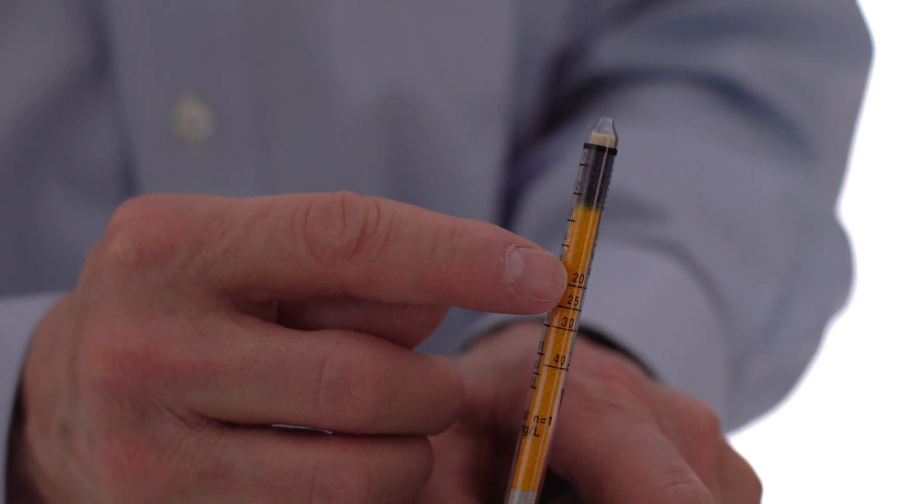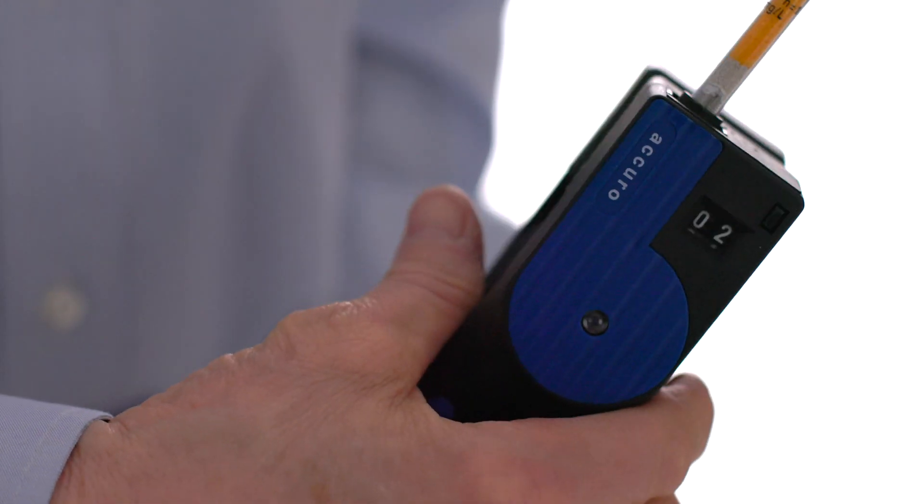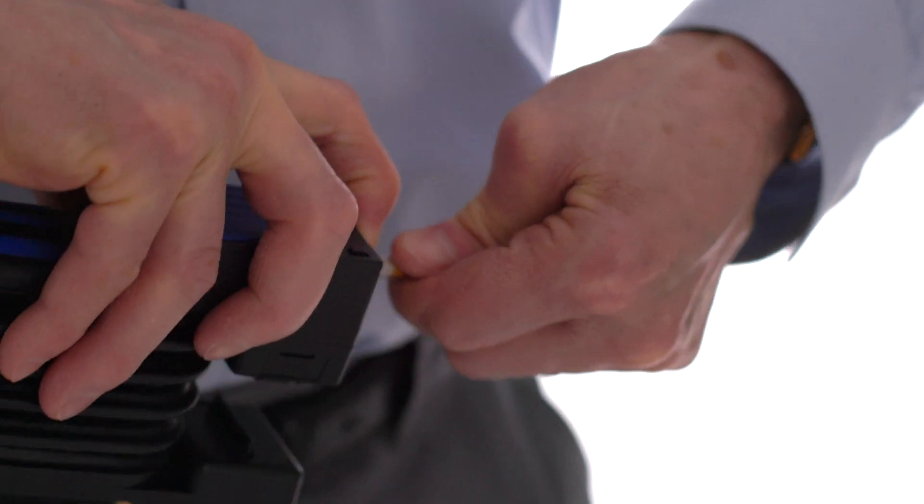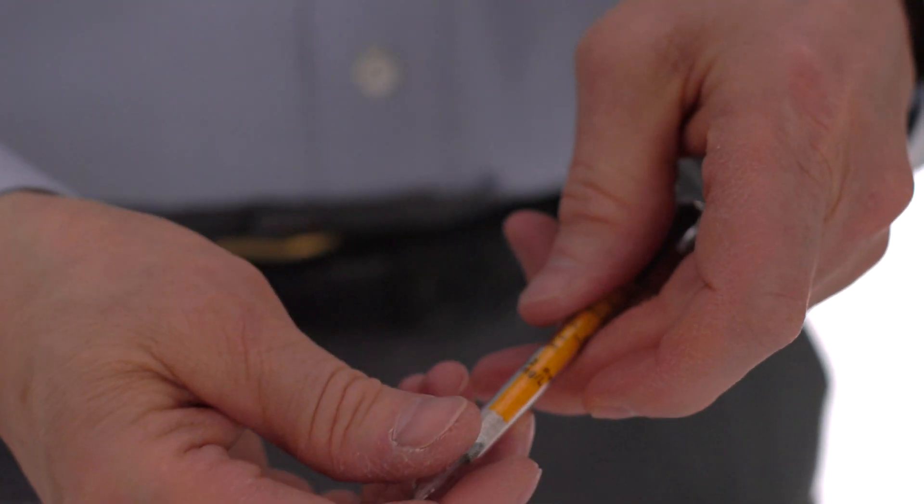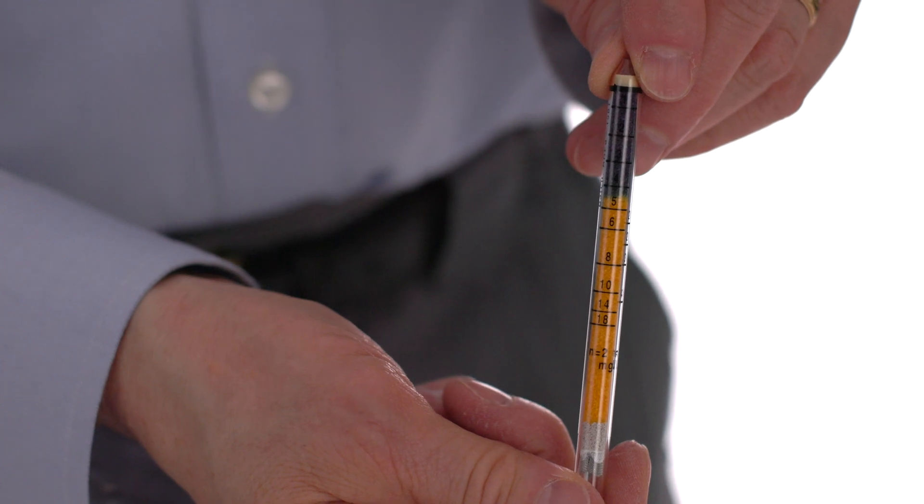The discoloration did not reach the high range scale. Therefore, we need one additional stroke. Remove the tube and read the discoloration immediately. You can see this reading is about 5.5 milligrams per liter.